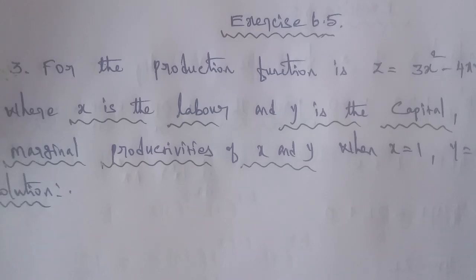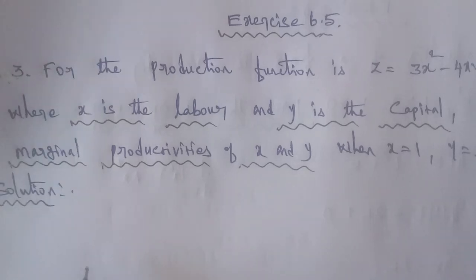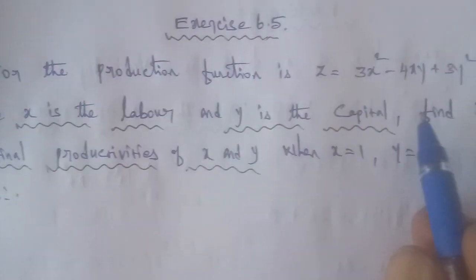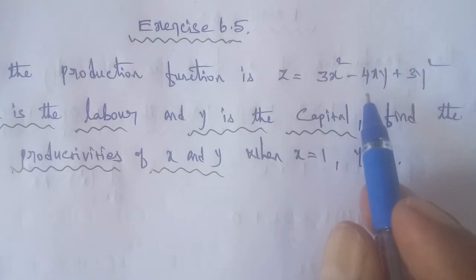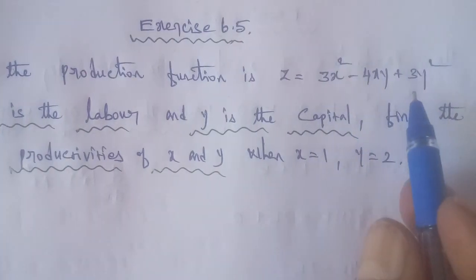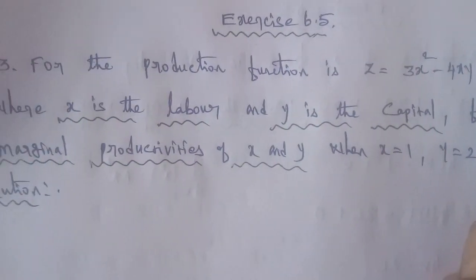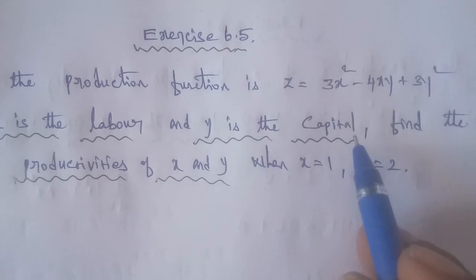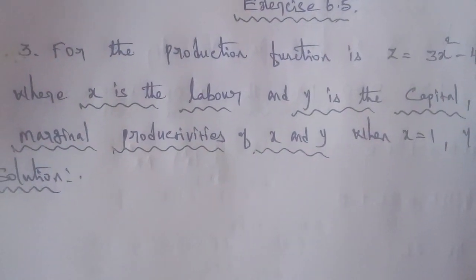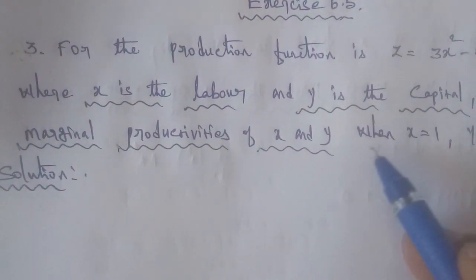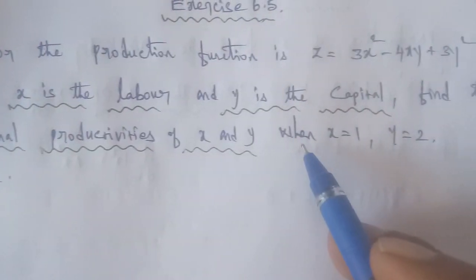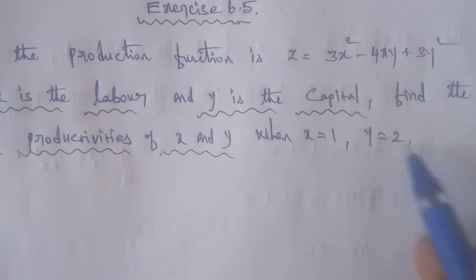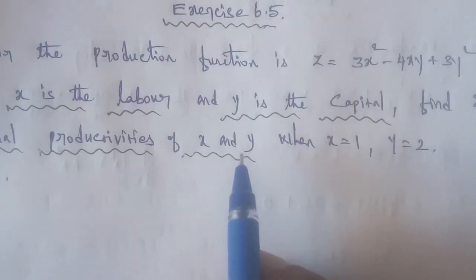Exercise 6.5, Q3. For the production function Z is equal to 3X squared minus 4XY plus 3Y squared, where X is the labor and Y is the capital, find the marginal productivities of X and Y when X is equal to 1 and Y is equal to 2.